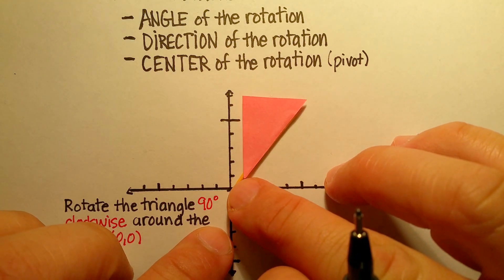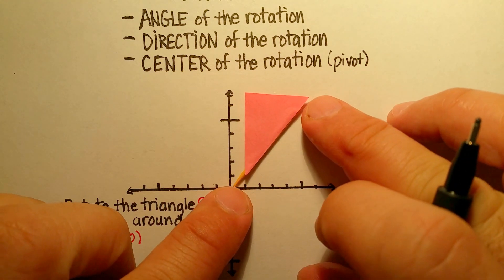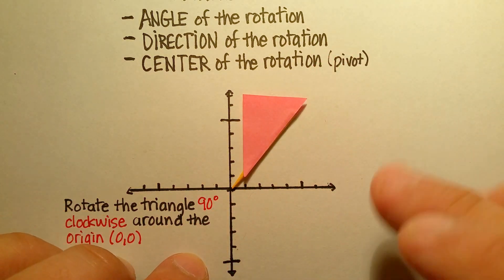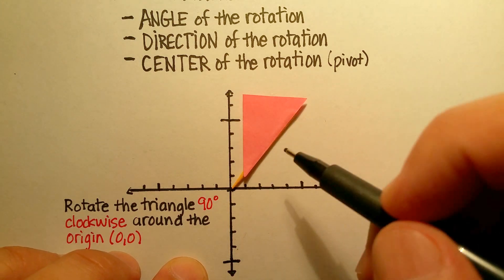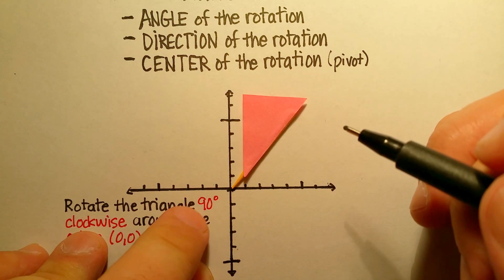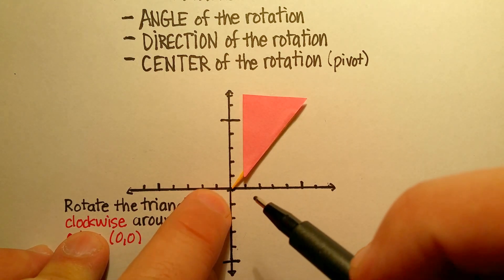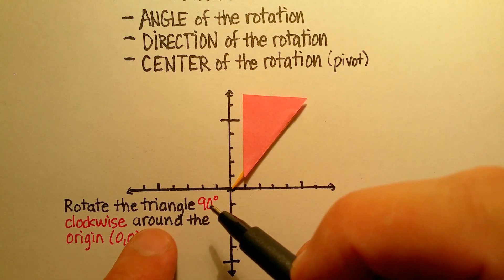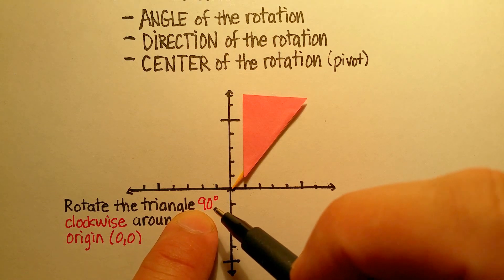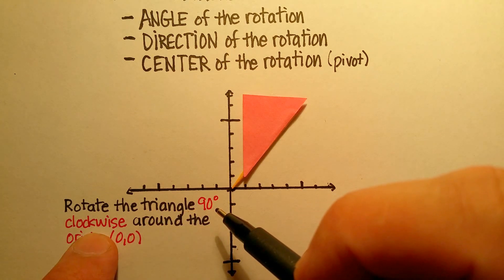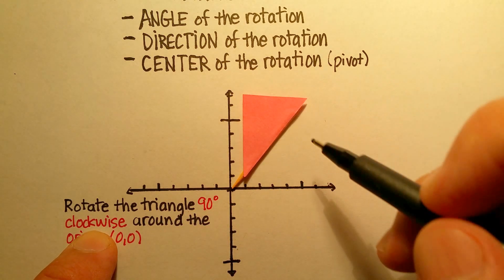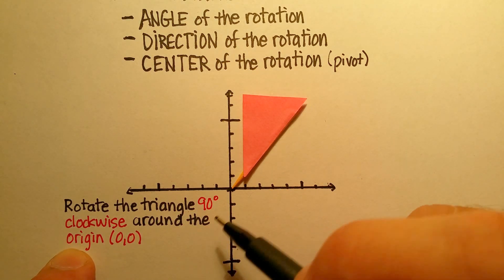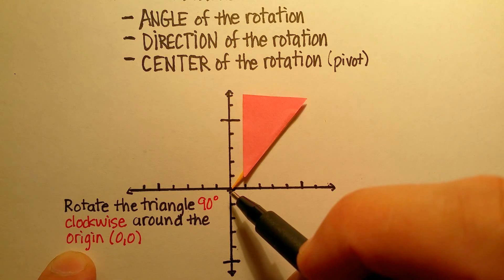Here I've set up a really simple example of a triangle. This is a right triangle, and I'm going to rotate it 90 degrees clockwise around the origin, which is (0, 0).